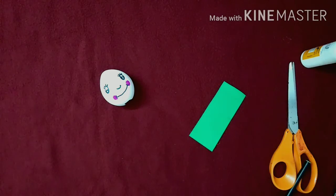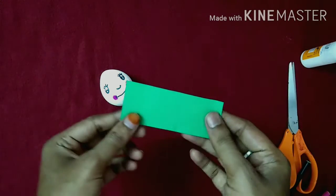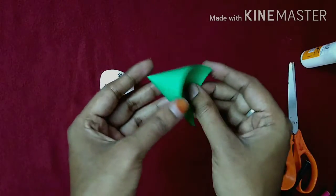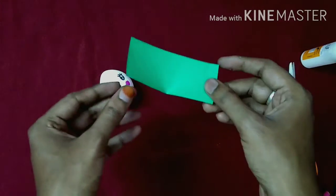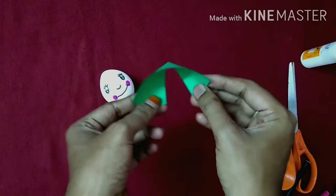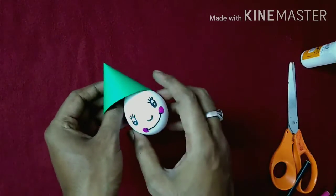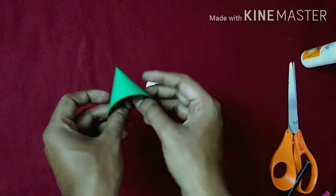After finishing this, take green color paper. Draw like this. Just observe, it's simple. I am folding here. Okay, after that, check the length.